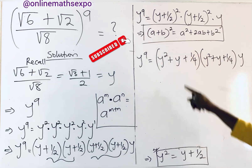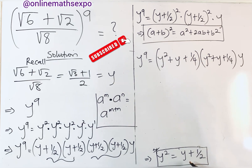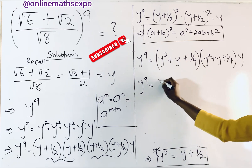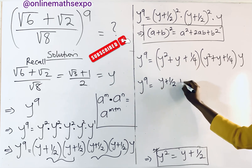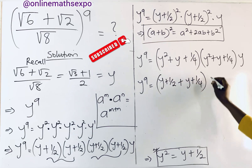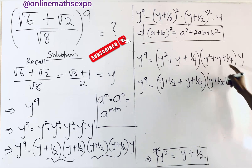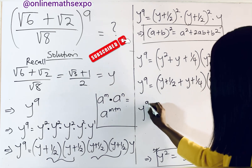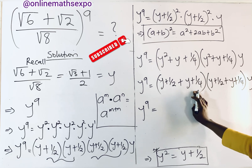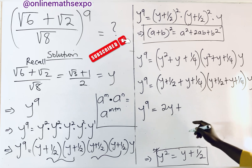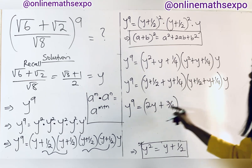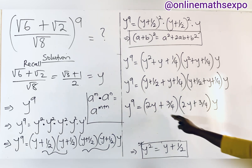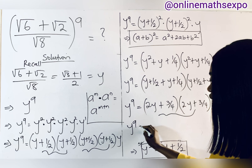We again replace y² with (y + 1/2), so y² + y + 1/4 becomes (y + 1/2) + y + 1/4. Combining like terms: y + y gives 2y, and 1/2 + 1/4 gives 3/4. So (y + 1/2)² simplifies to 2y + 3/4. We now have y⁹ equals (2y + 3/4)² times y.